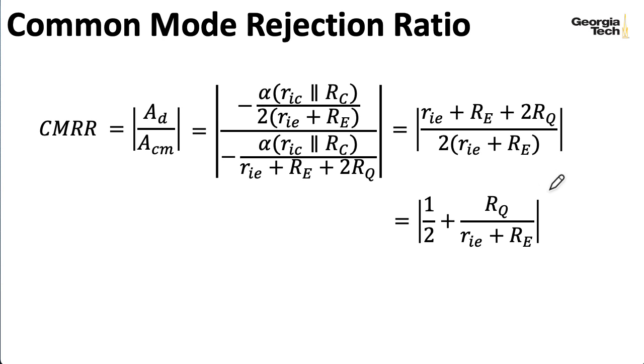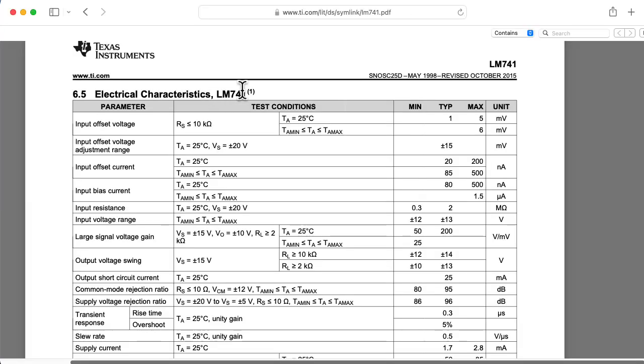Ideally, the common mode rejection ratio is infinite, which is something we get if we let RQ go to infinity. Usually the CMRR is expressed in decibels. So you would take this quantity here and take the base 10 logarithm and multiply it by 20 to get it into decibels. For instance, the 741 op amp data sheet lists a common mode rejection ratio of 95 as being typical and 80 as being a minimum.